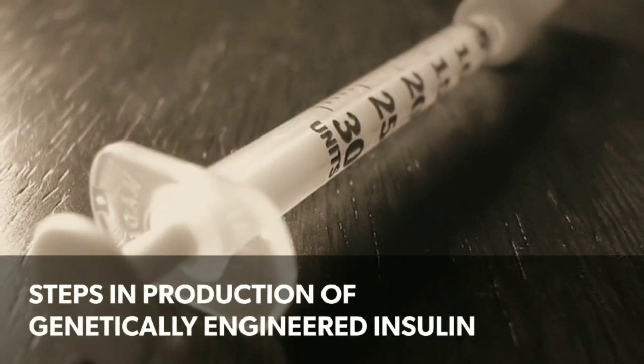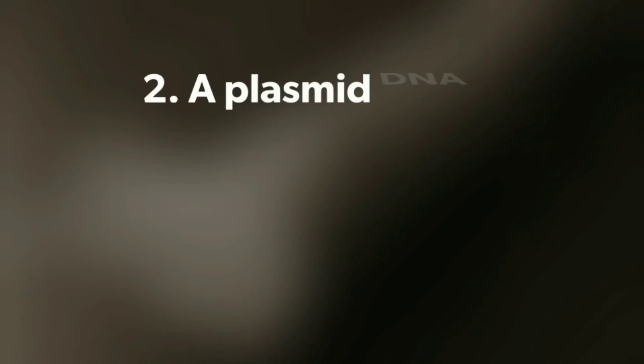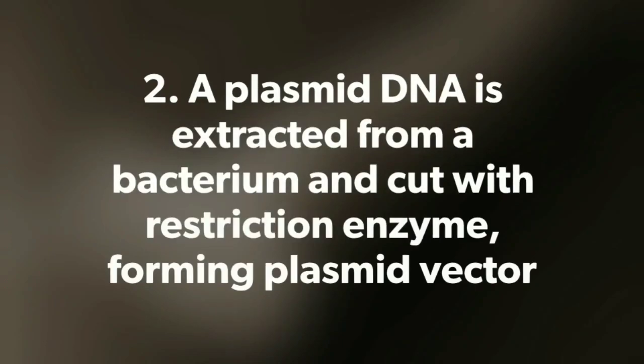Steps in production of genetically engineered insulin: First, human insulin is extracted from the pancreas and an insulin-producing gene is isolated. Second, a plasmid DNA is extracted from a bacterium and cut with a restriction enzyme, forming a plasmid vector.